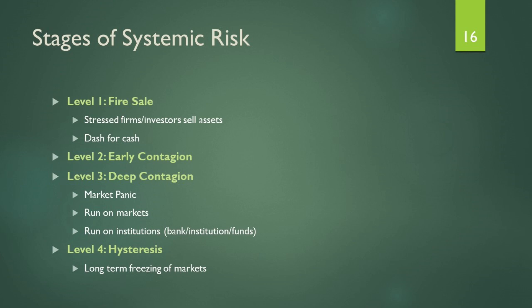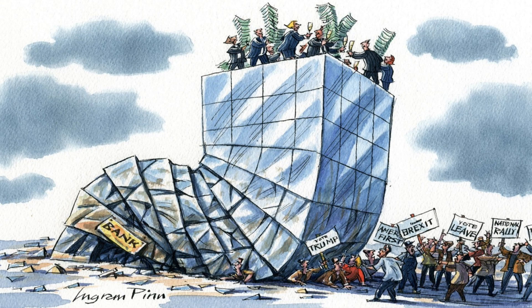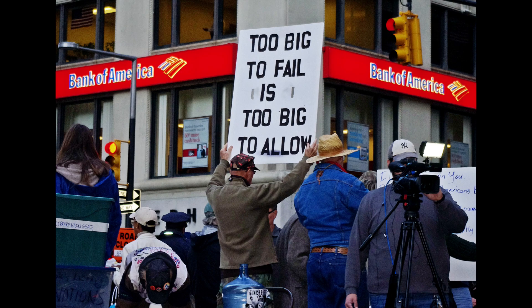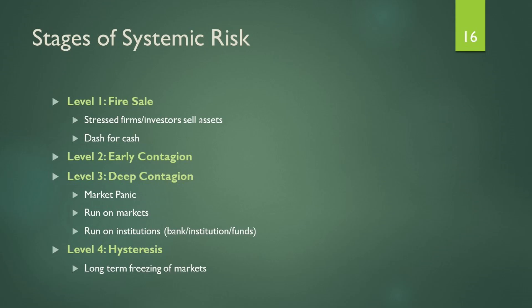Moreover, we saw from the global financial crisis that banks' liabilities were short-term and liquid — meaning depositors deposited for a short time and wanted their money back quickly. On the other hand, the banks' assets were long and illiquid, meaning banks loaned out their depositors' money on a long-term basis and could not easily call those loans back. As a result, they needed to constantly refinance, which made banks especially vulnerable to systemic risk.